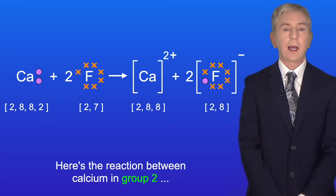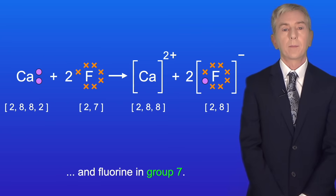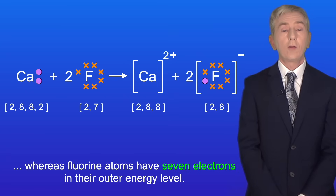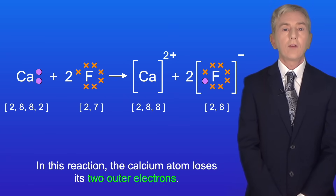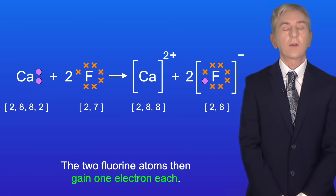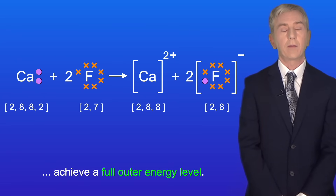Here's the reaction between calcium in group 2 and fluorine in group 7. Calcium atoms have 2 electrons in their outer energy level whereas fluorine atoms have 7 electrons in their outer energy level. In this reaction the calcium atom loses its 2 outer electrons, and the 2 fluorine atoms then gain 1 electron each. Both the calcium atom and the 2 fluorine atoms achieve a full outer energy level.